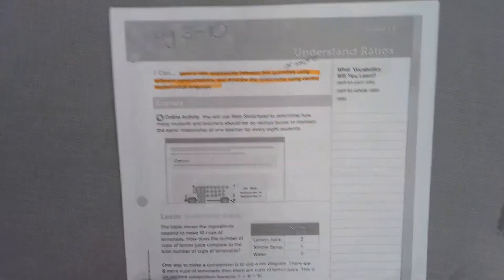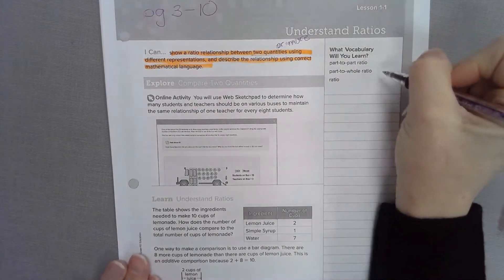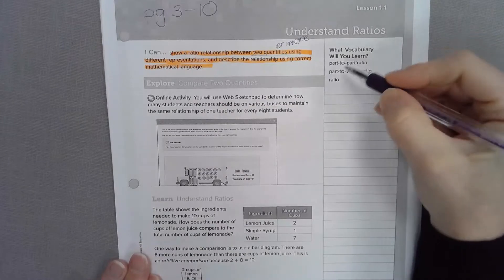We're going to go over some vocabulary that we started last week. There are a couple types of ratios. There's part to part and part to whole.